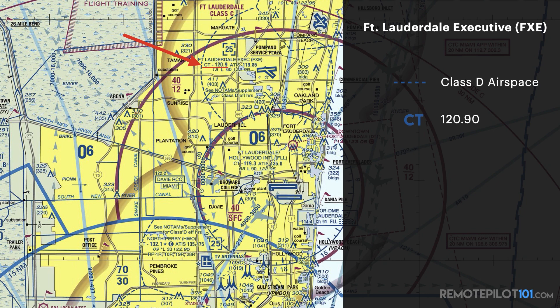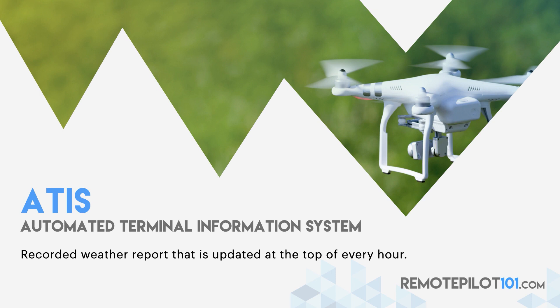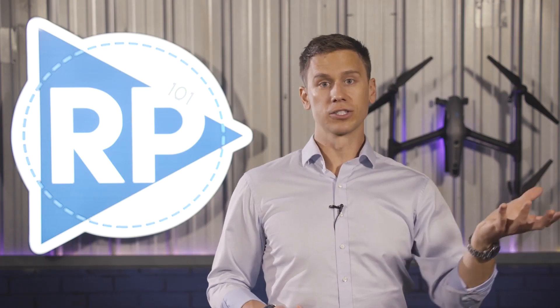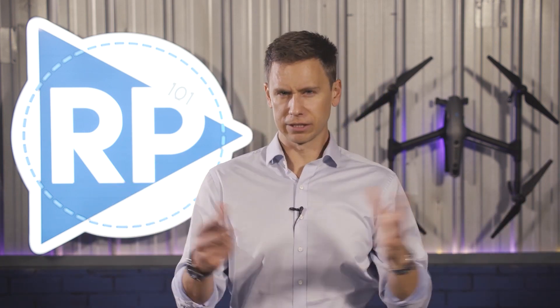Directly underneath that control tower frequency is the automated terminal information system, known as the ATIS. The frequency is 119.85, and the ATIS is a recorded weather report updated on the top of the hour — basically reading you the current METAR. Beneath that is the UNICOM frequency of 122.95. If we landed at the airport in a manned airplane and needed fuel, that's the frequency we'd call on. At some airports, the CTAF and the UNICOM are the same thing, but at Fort Lauderdale Executive, the control tower frequency, the UNICOM, and the ATIS are all separate frequencies.